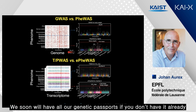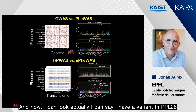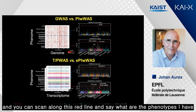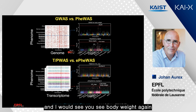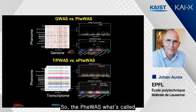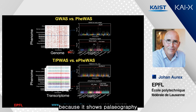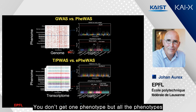We will soon all have our genetic passports, if we don't already. I have a full genome done on myself at 100x. I can say I have a variant in RPL26. You can scan along this red line and ask, what are the phenotypes I have? You see body weight again, but also fat mass and VO2 max. This phenome-wide association study is much more powerful because it shows pleiotropy — you don't get one phenotype, but all the phenotypes.